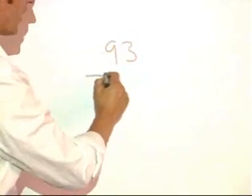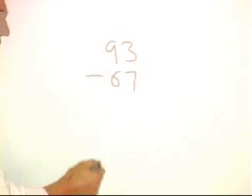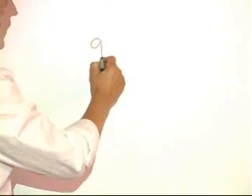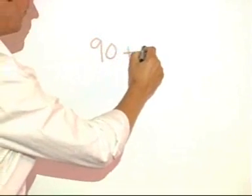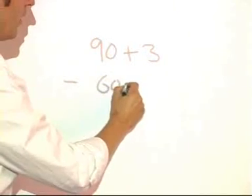I can expand it slightly into the place value parts like this. 90 plus 3 take away 60 plus 7.